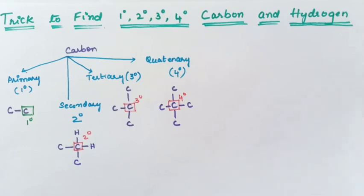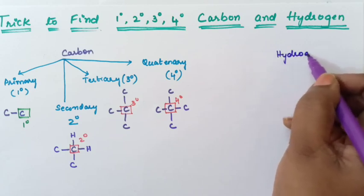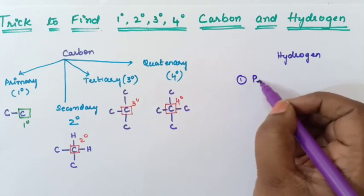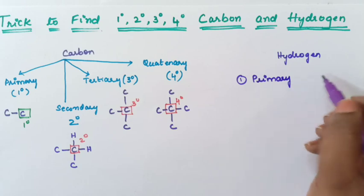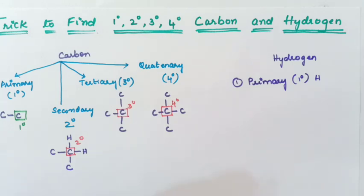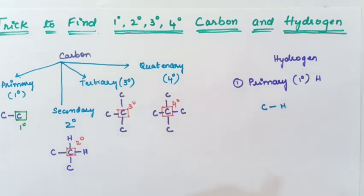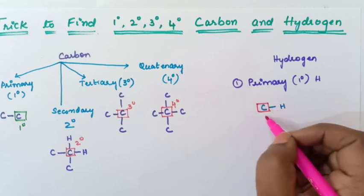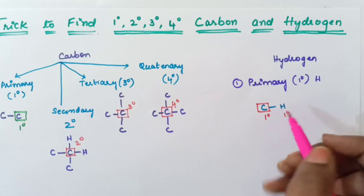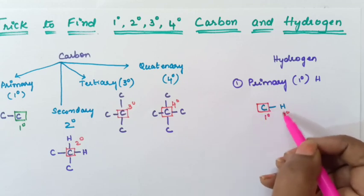Now we will see about hydrogen atoms. Hydrogen is also classified as primary, secondary, and tertiary. Primary hydrogen is hydrogen which is connected to a primary carbon. So you have to check the carbon to which the hydrogen is connected — if that carbon is a primary carbon, it is a primary hydrogen.